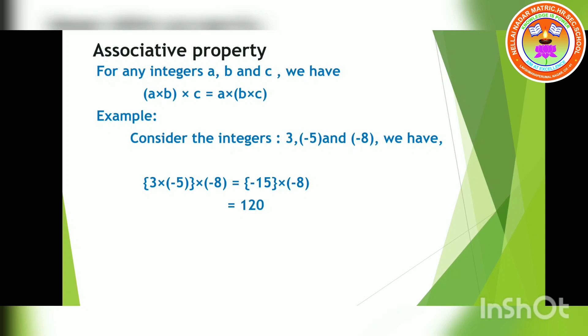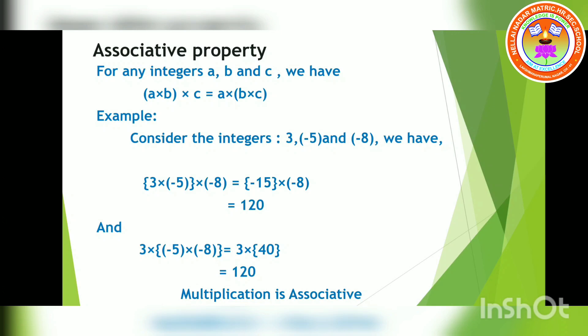Now taking the RHS: a into (b into c), substituting 3 into (minus 5 into minus 8). First, minus 5 into minus 8 — the numbers inside the bracket — gives plus 40. Then 3 into 40 is 120. So both sides give 120. From this, we say that multiplication is associative since both sides give the same value.